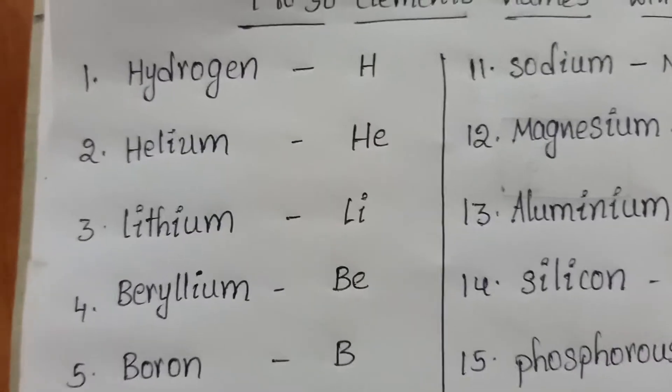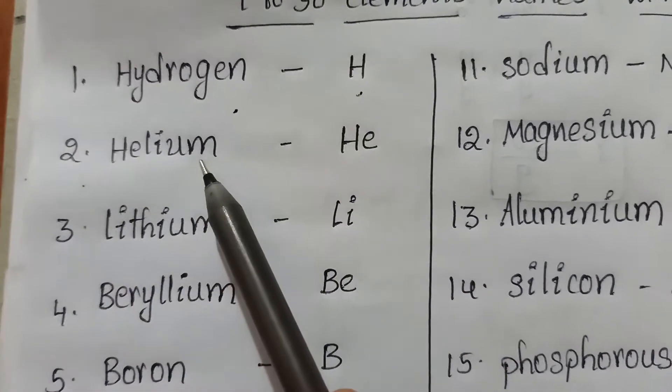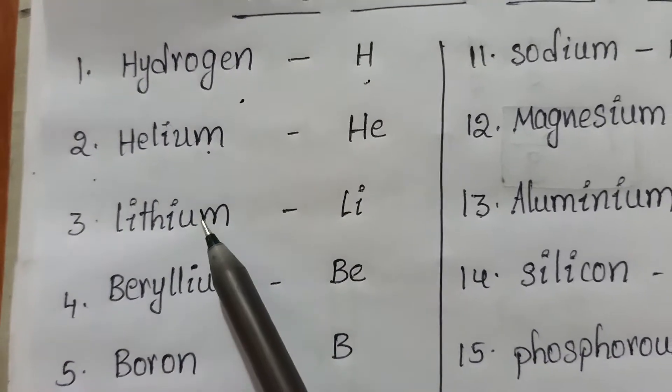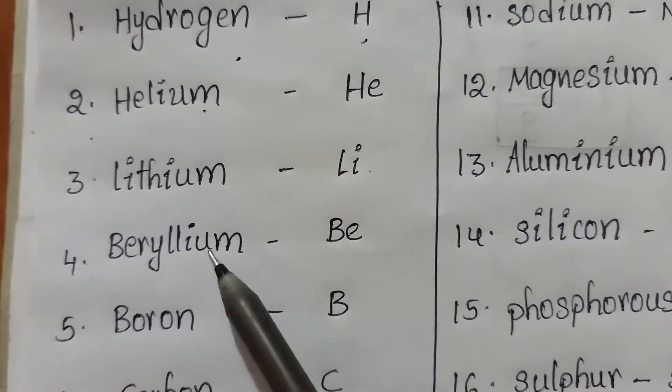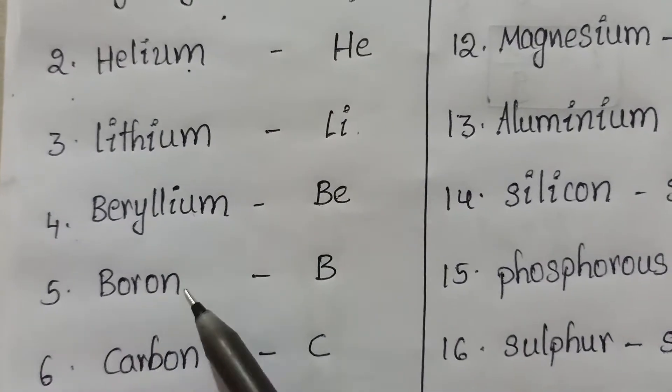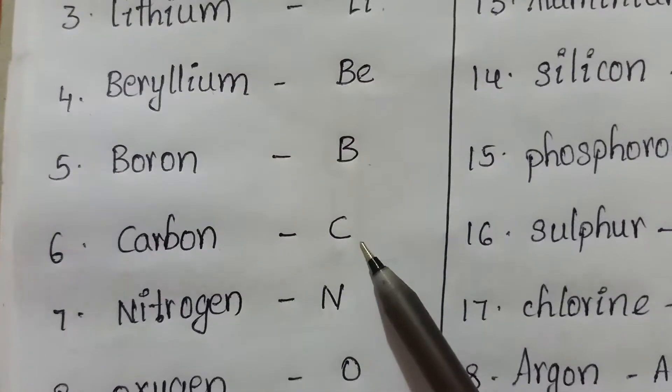First one, hydrogen, symbol is H. Second one, helium, symbol HE. Third one, lithium, symbol LI. Fourth one, beryllium, symbol BE. Fifth one, boron, symbol B. Sixth one, carbon, symbol C.